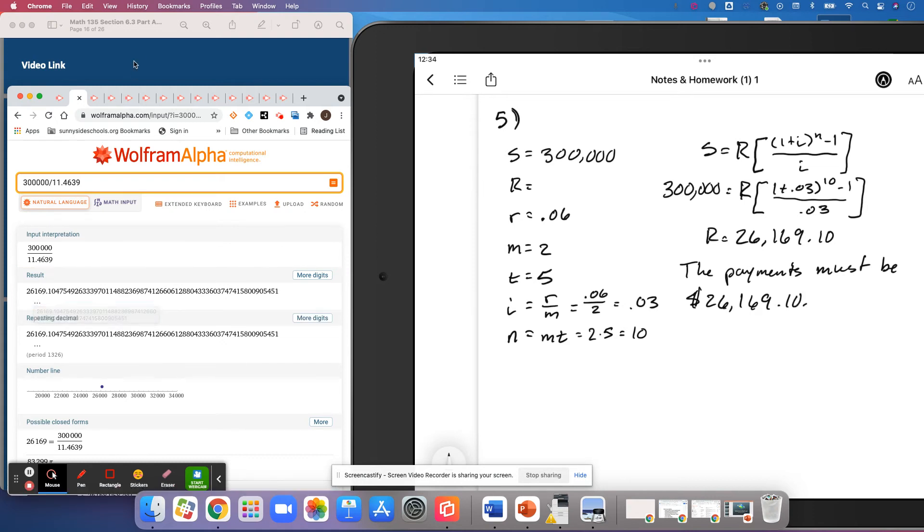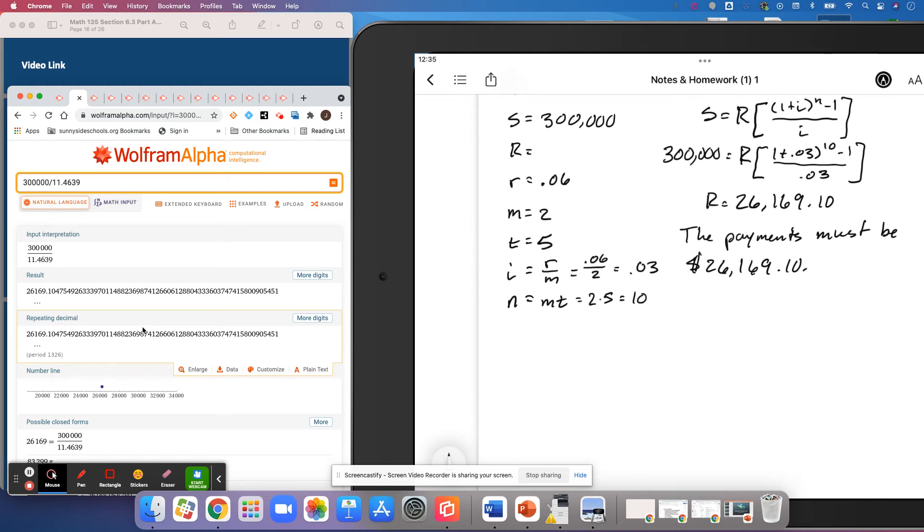And I'm actually going to add to this question everyone. I'm going to add a question: how much does this save the company? Because why would you do it if it's not going to save you money? And so let's go ahead and do the math for that. We would have $26,169.10 paid into an account twice a year for five years.